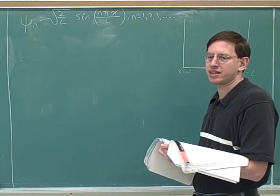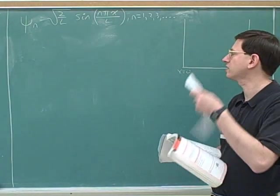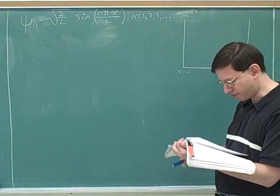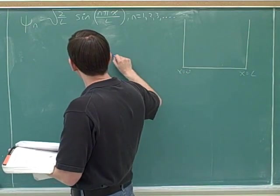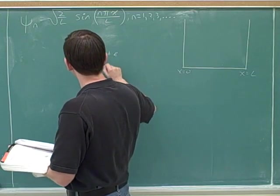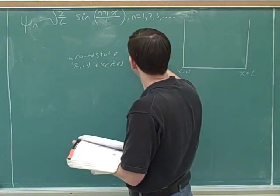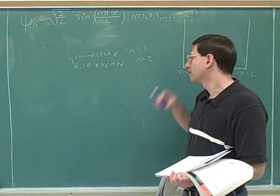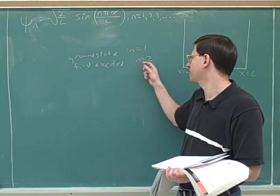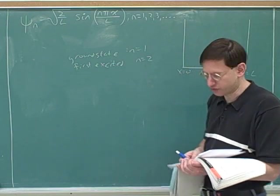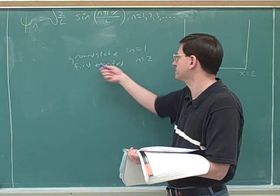What would n be for the ground state? The ground state is the lowest possible energy, and in this case that is n equals 1. How about the first excited state — what would n be? It would be n equals 2. It's easy to get confused: the first excited state is the first state above n equals 1, so even though we say 'first,' the first excited state is actually n equals 2, because the ground state is n equals 1. If they said the first energy level that would be n equals 1, but the first excited state means n equals 2. The excited states are the states above the ground state.